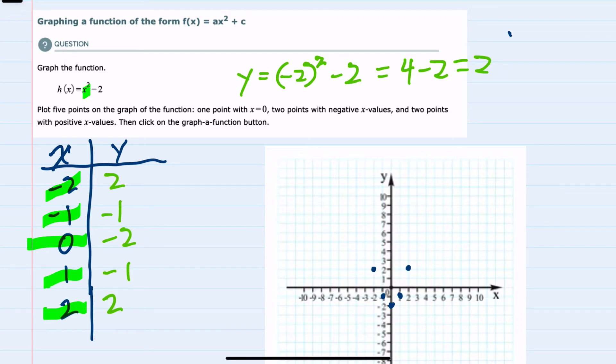And when we graph this function, since it is a parabola, it has that u-like shape going through the points we've identified would be our graph.